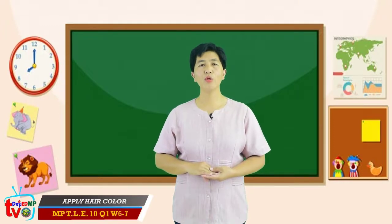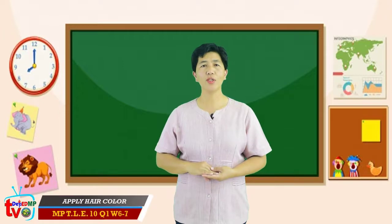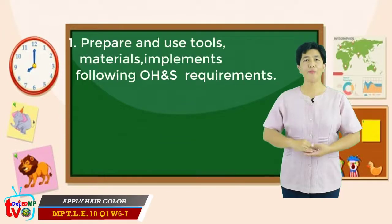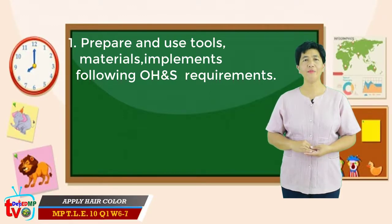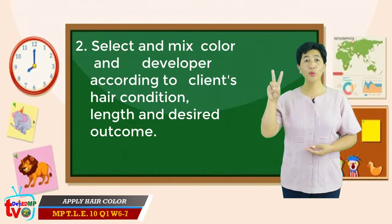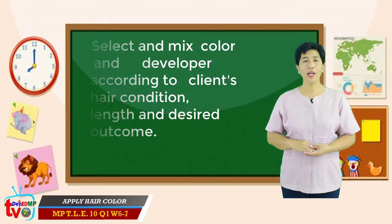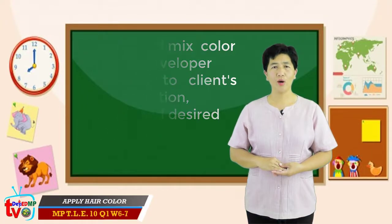The most essential learning competency for our lesson is to apply hair color. At the end of the lesson, you should be able to: Number 1, prepare and use tools, materials, and implements following occupational health and safety requirements. Number 2, select and mix color and developer according to the client's hair condition, length, and desired outcome.